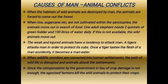Third, weak and injured animals have a tendency to attack man. A tiger attacks man to protect its cubs. Once a tiger tastes human flesh accidentally, it becomes a man-eater and will continue searching for man. Fourth, when wildlife corridors are converted into human settlements, the path of wildlife is disrupted and animals attack the settlements. Fifth, since government compensation for crop damage is insufficient, agonized farmers kill wild animals to protect their crops.